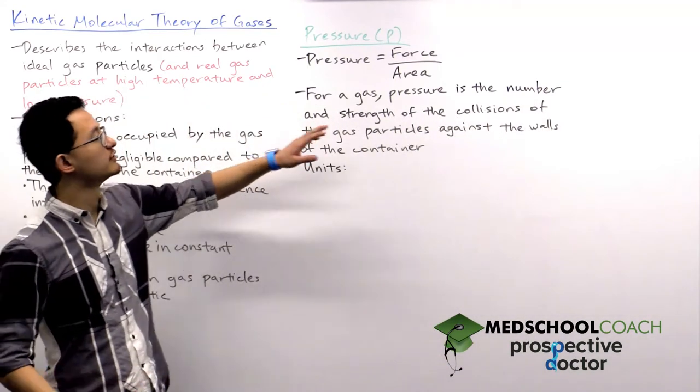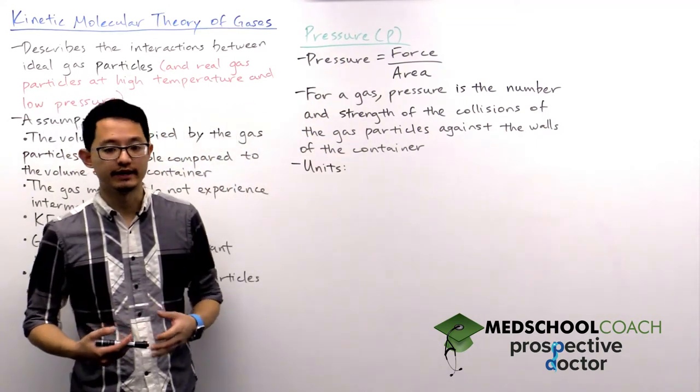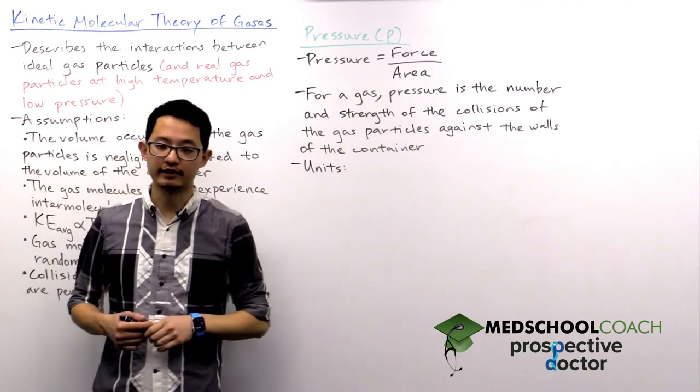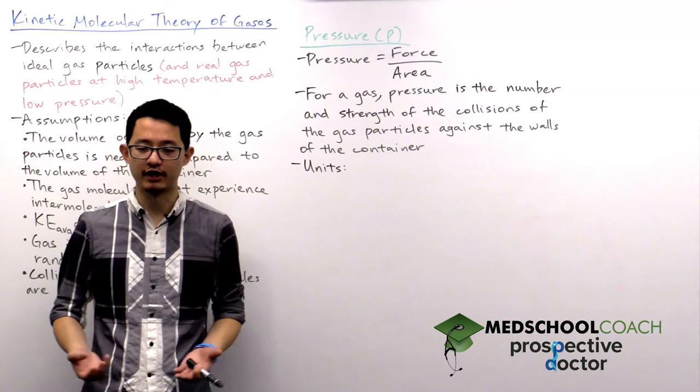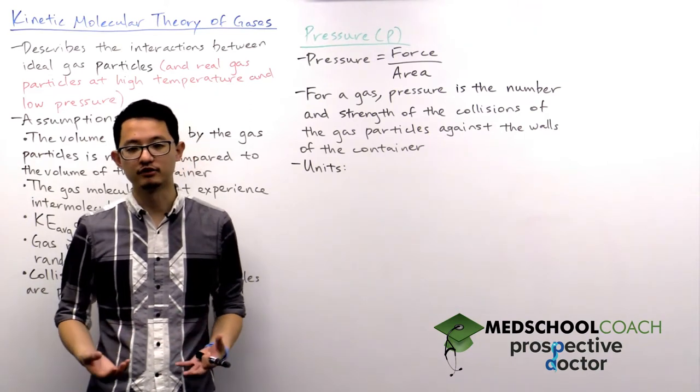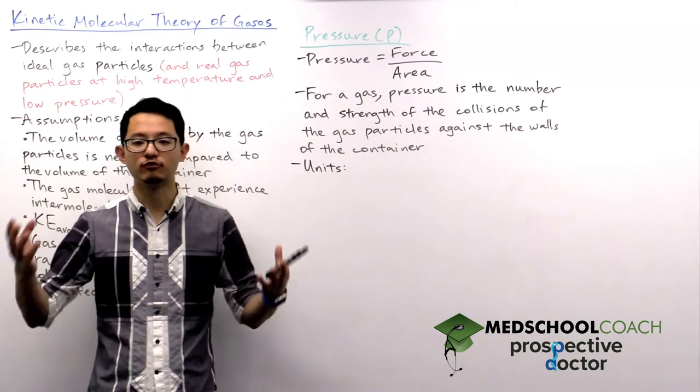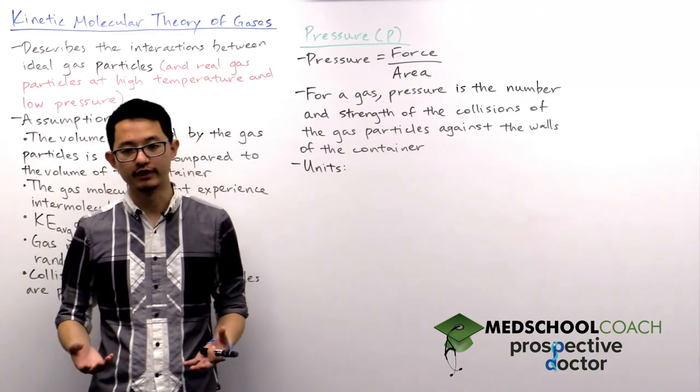Okay, so now that we know what the kinetic molecular theory of gases is, let's move on to discuss pressure, which is noted by capital P. Pressure is formally defined as force over area. At this point we haven't really discussed any forces. You might be wondering where is this pressure coming from.